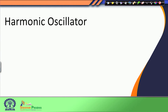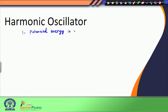Today in this lecture, we will deal with another problem which is the harmonic oscillator, where the potential energy is actually a continuously varying function of the coordinate. The first difference is that here in this problem, the potential energy is a continuously varying function.